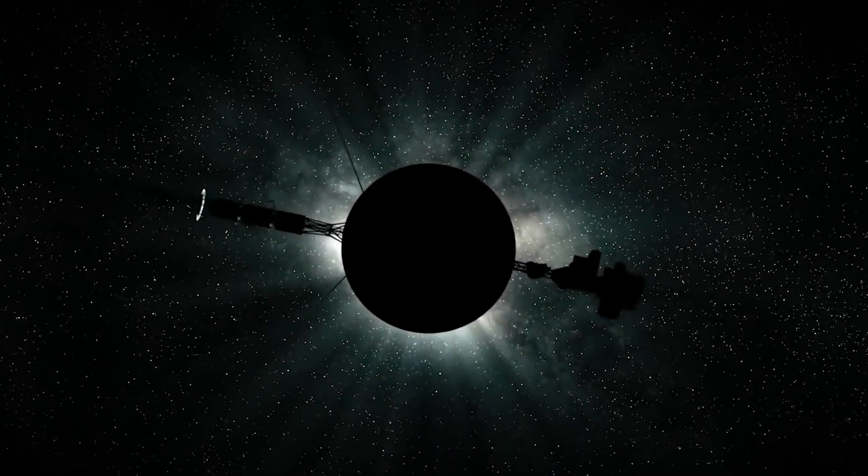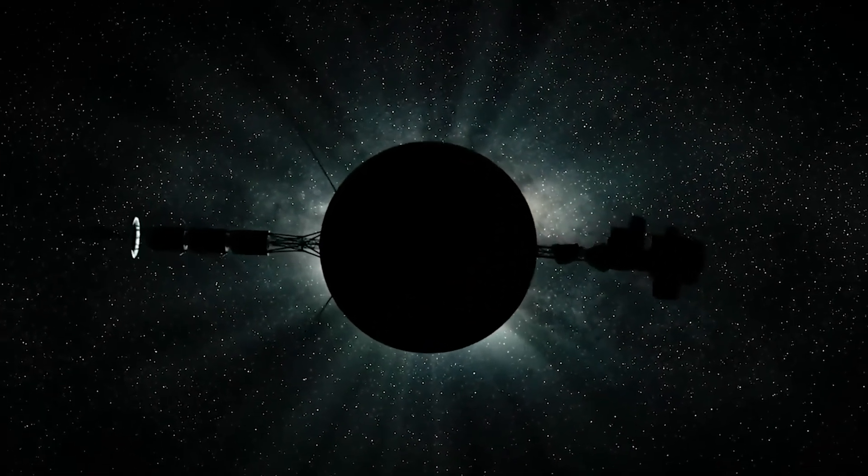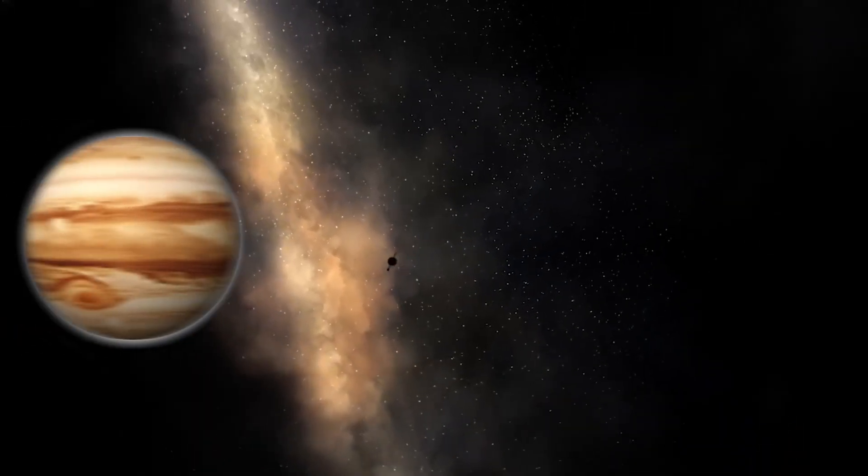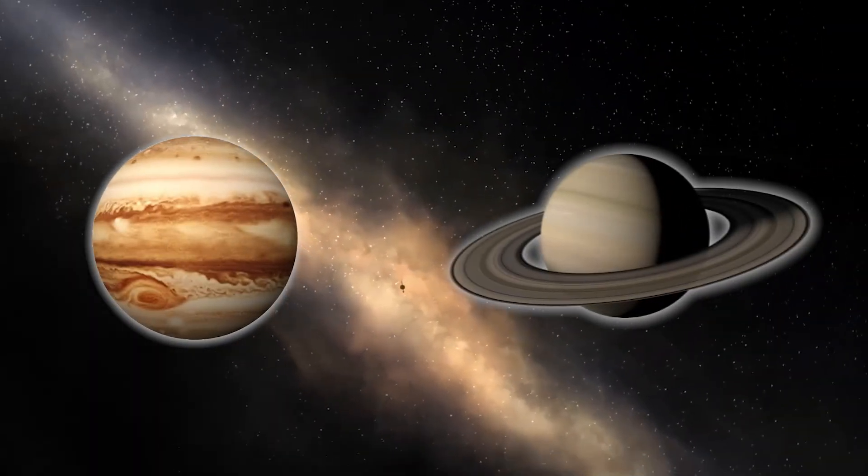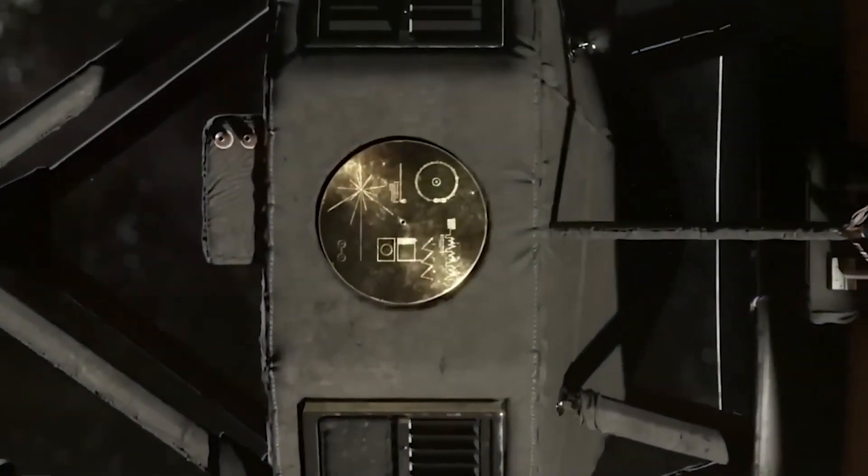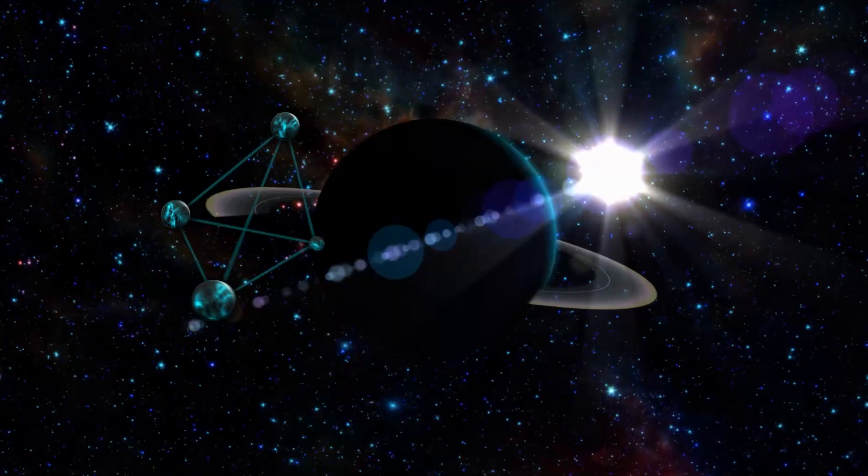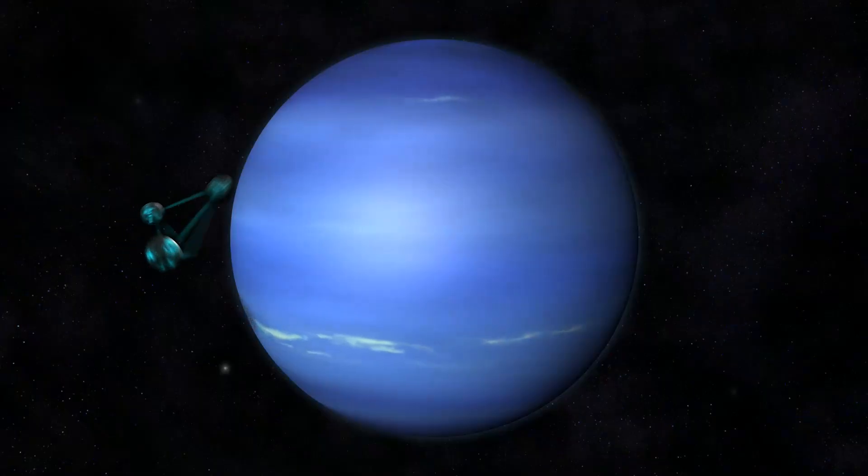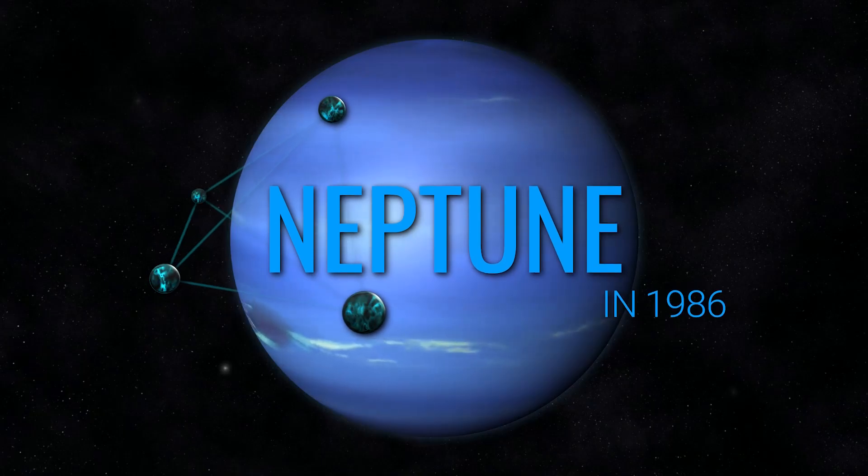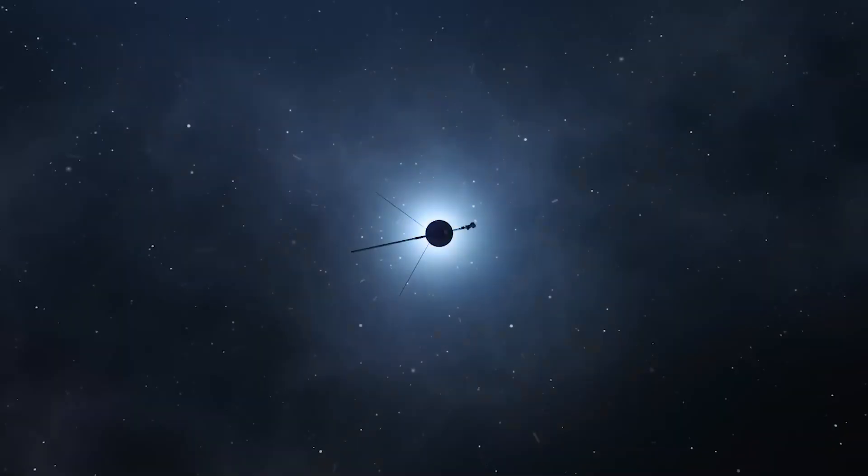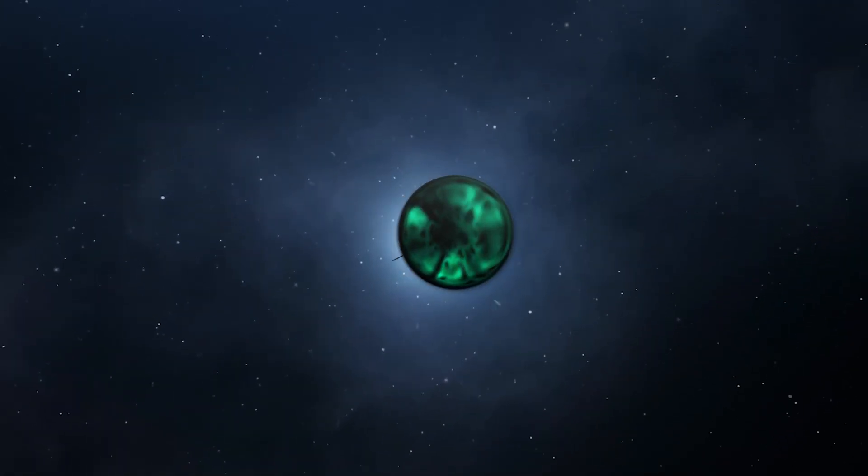Voyager 1 and Voyager 2 were launched within weeks of each other, with a goal of studying Jupiter and Saturn. After successfully exploring these planets, Voyager 2 made history by being the first spacecraft to fly by Uranus in 1986 and Neptune in 1989. These visits to four planets were known as the Voyager Grand Tour.